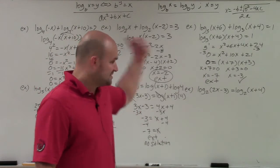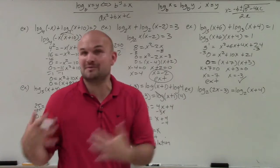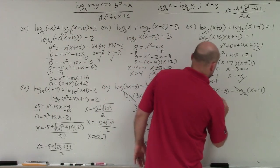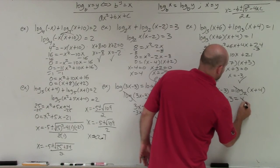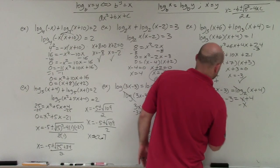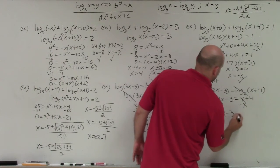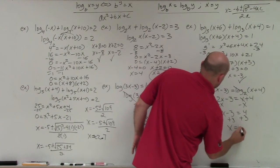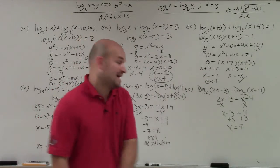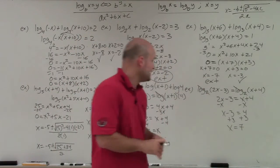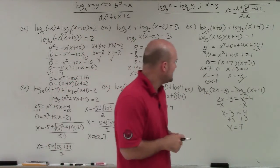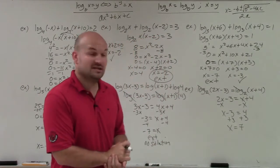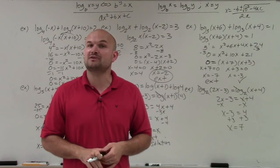The last example is one of the easier ones. Whenever you have a logarithm equal to another logarithm with the same base, you just apply the one-to-one property directly. So 2x minus 3 equals x plus 4. Solving: x equals 7. Plugging back in: 14 minus 3 is 11, and 7 plus 4 is 11 — both sides match. That is how you solve logarithmic equations.